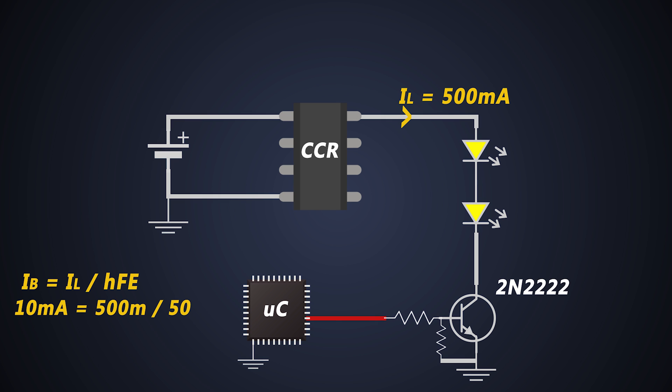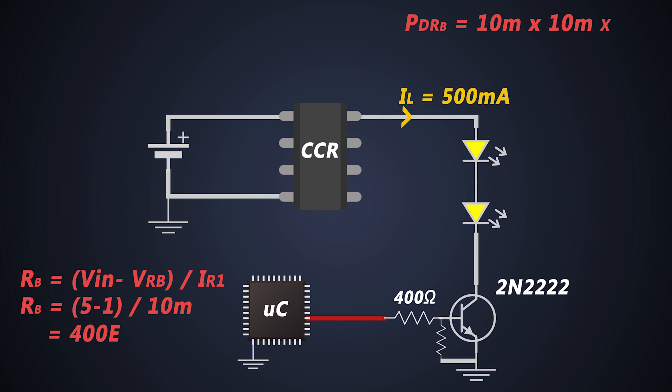So around 10mA is required to turn on this BJT, and the RB, that is base resistance, is around 400 ohms, and the power dissipation of this resistor will be around only 40mW, and a 2.2kohm resistor from the base to emitter or ground as a pull down resistor when BJT is turned off.